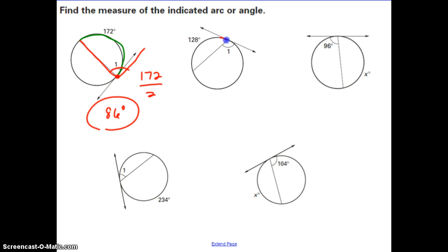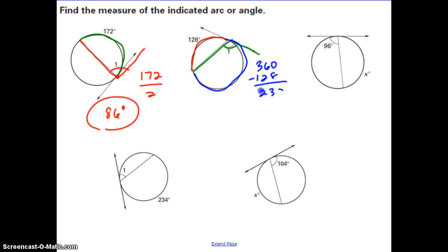This next example uses the same idea but requires two steps, since the given arc and the angle we need don't correspond directly. First, find the rest of the circle: 360 minus 128 equals 232 degrees for the other arc. Then take half of 232, giving us 116 degrees for the angle.